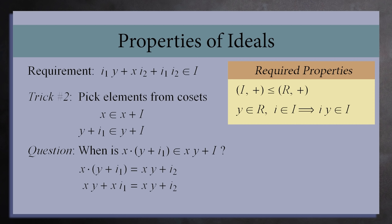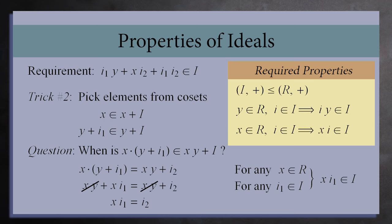Once more, we multiply out and cancel the xy terms, and find that x times I₁ equals I₂, which means that x times I₁ must be in the set I. So for any element in the ring x, x times I₁ must also be in I. Let's add this to our list of requirements as well.